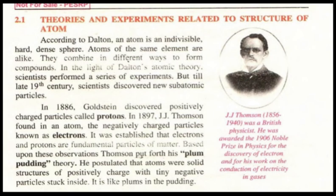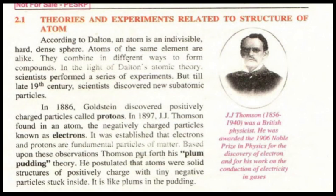According to plum pudding theory, Thomson postulated that atoms were a solid structure of positively charged material with tiny negatively charged particles stuck inside — it is like plum in the pudding. It means the atom is a positively charged, solid structure with negatively charged particles embedded in it, like plums in a pudding. This plum pudding theory is a short question frequently asked in papers, so this topic is very important from an exam point of view.